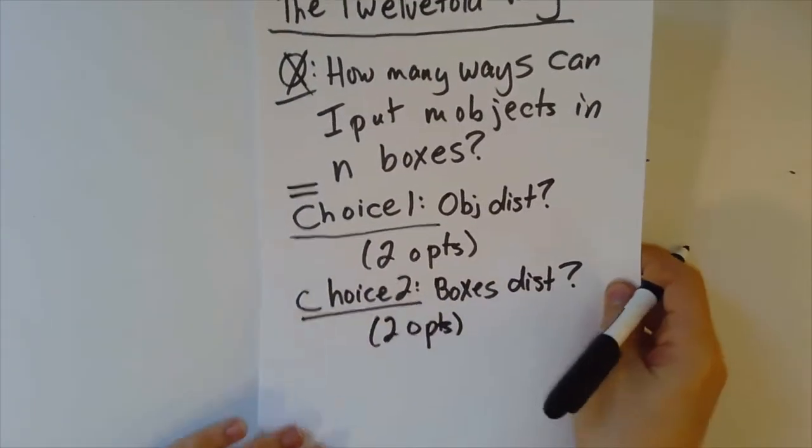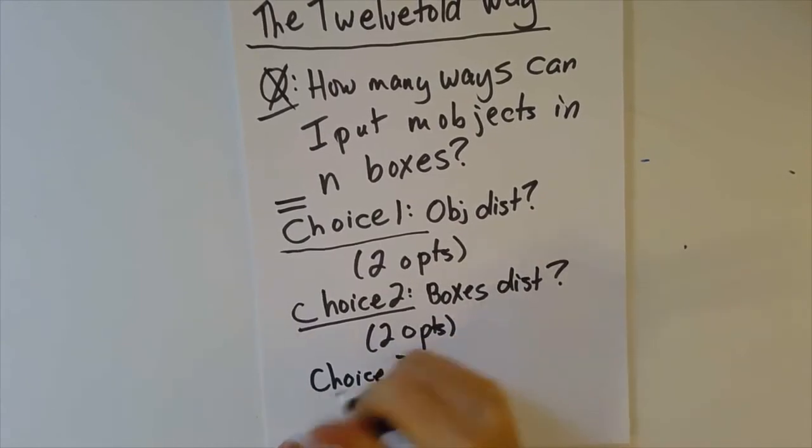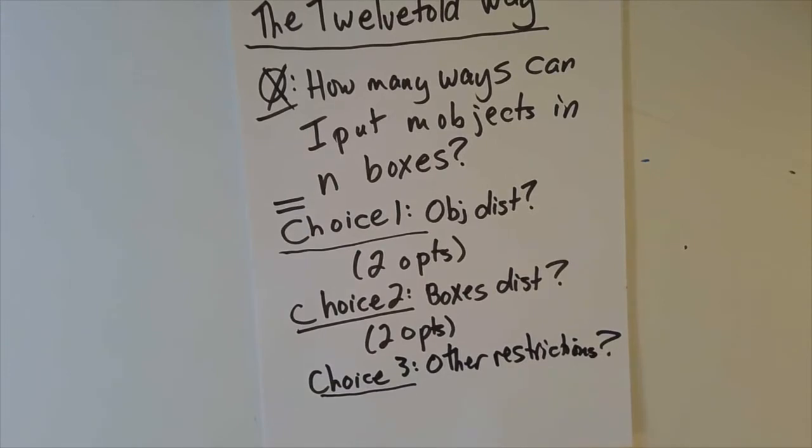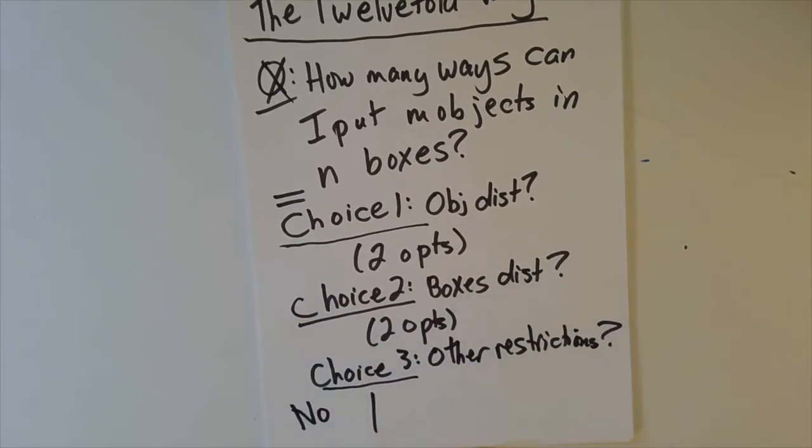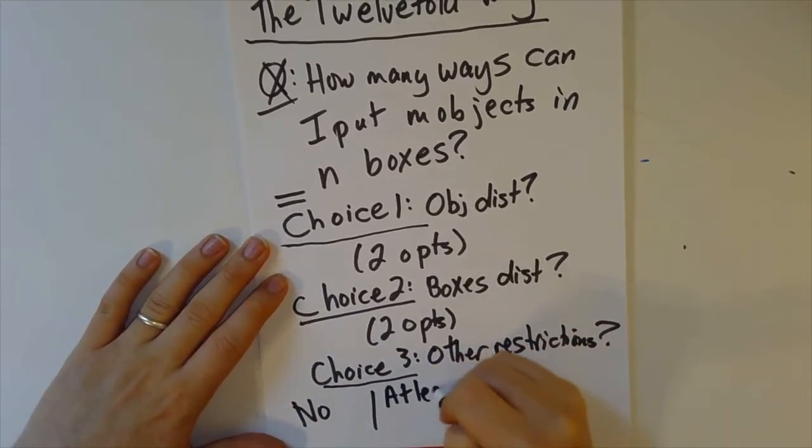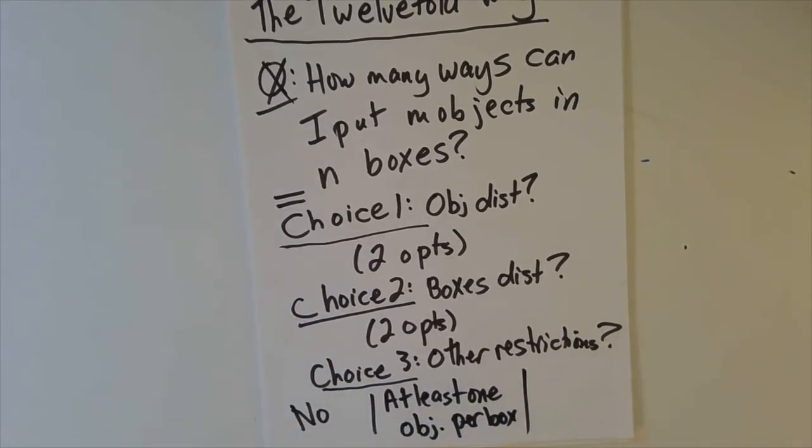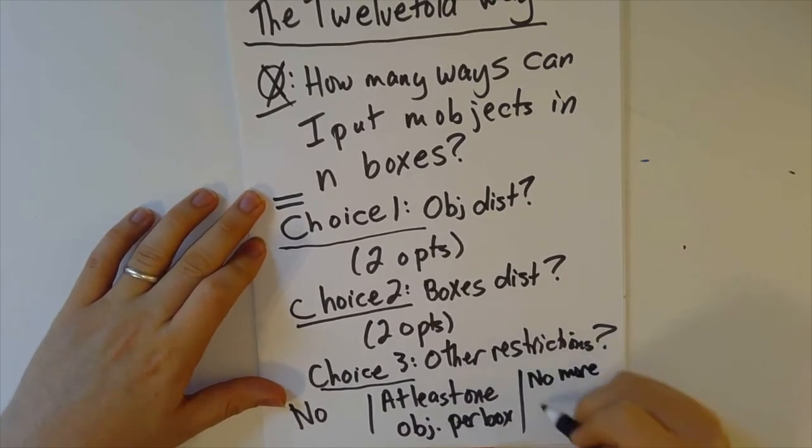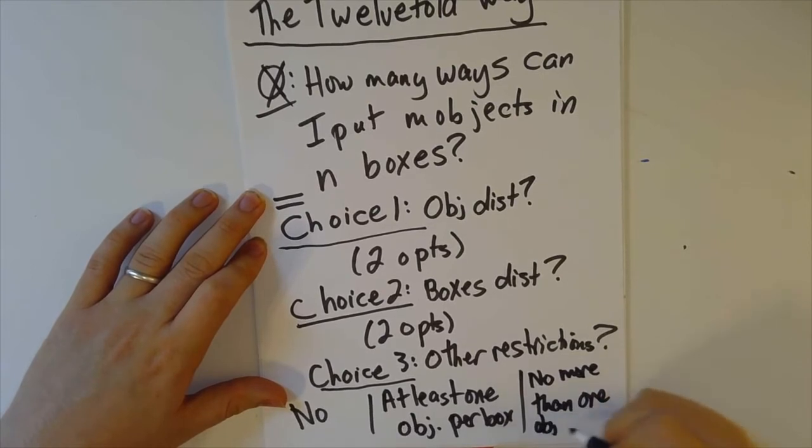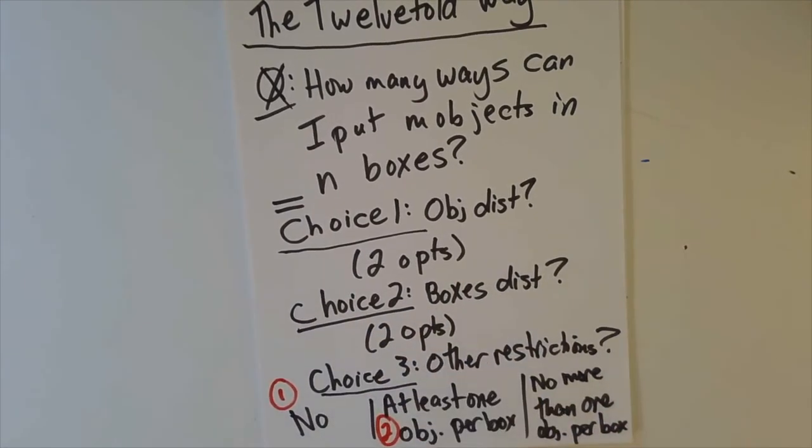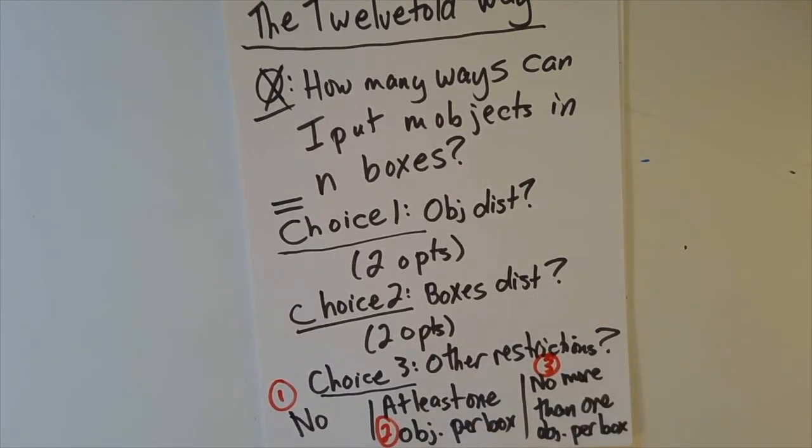And then choice three will be about other restrictions. What other restrictions might we have? We might have no other restrictions. We might have at least one object per box. And we might have no more than one object per box. So that is a total of three possible other restrictions: none, at least one object per box, and at most one object per box. So together, that gives me three more options.